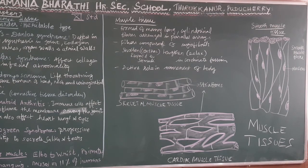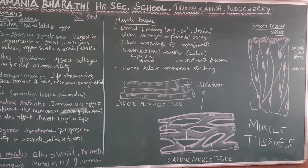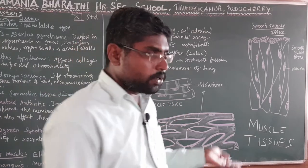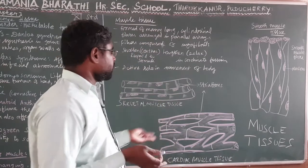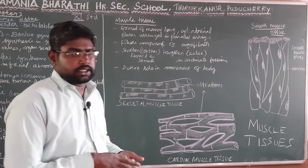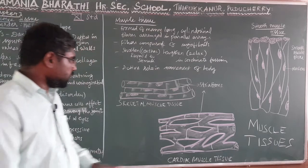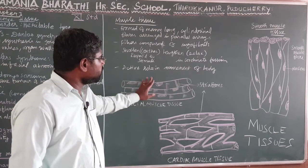Smooth muscles have an involuntary function and are not directly controlled by conscious thought. Skeletal muscles, unlike smooth muscles, can be controlled by merely thinking — they are under voluntary control with nerve coordination.